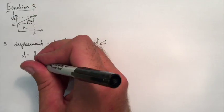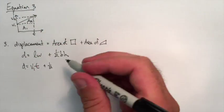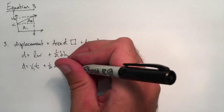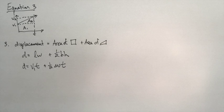So the area of the rectangle is the width, length times width, which would be V1 times T. The triangle would be half times base times height. So half times delta V times delta T.